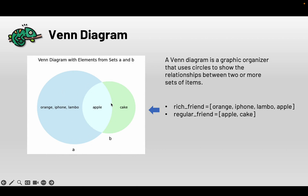We have two circles. The size of the circle represents how many items a person has, and they also have an overlap. From this chart you can see that the overlap is apple. Each side of the circles represents the possessions owned by a certain friend but not the other one. We are going to learn how to create this Venn diagram using Python.